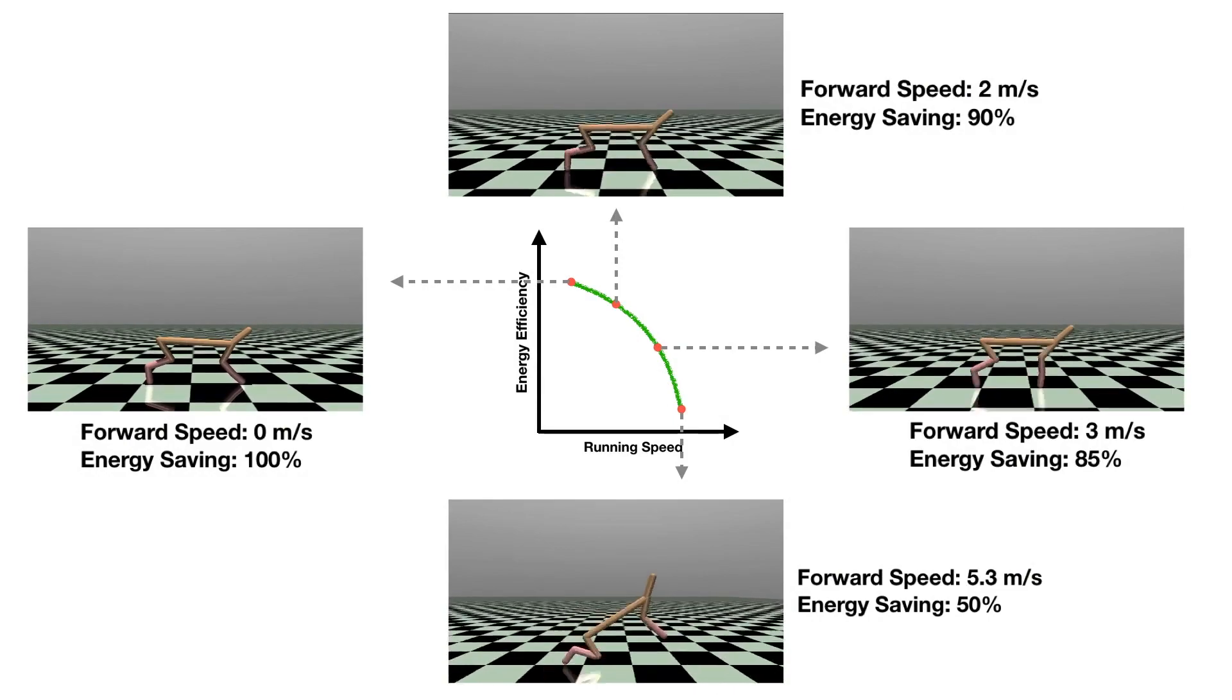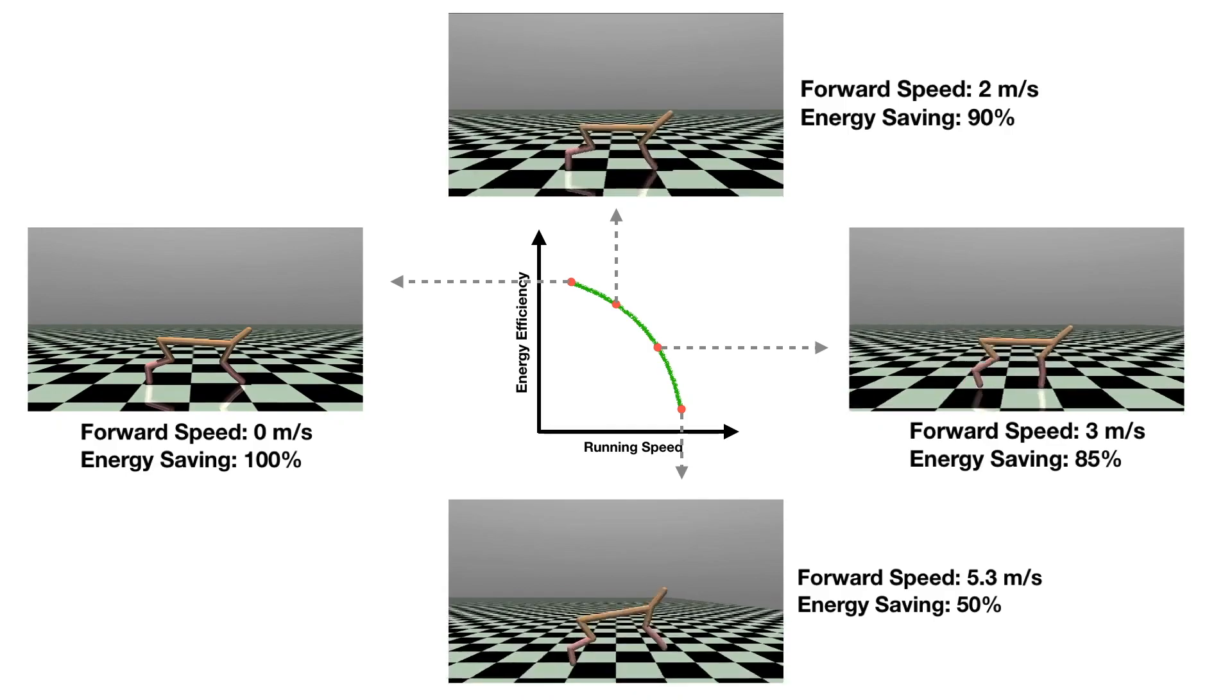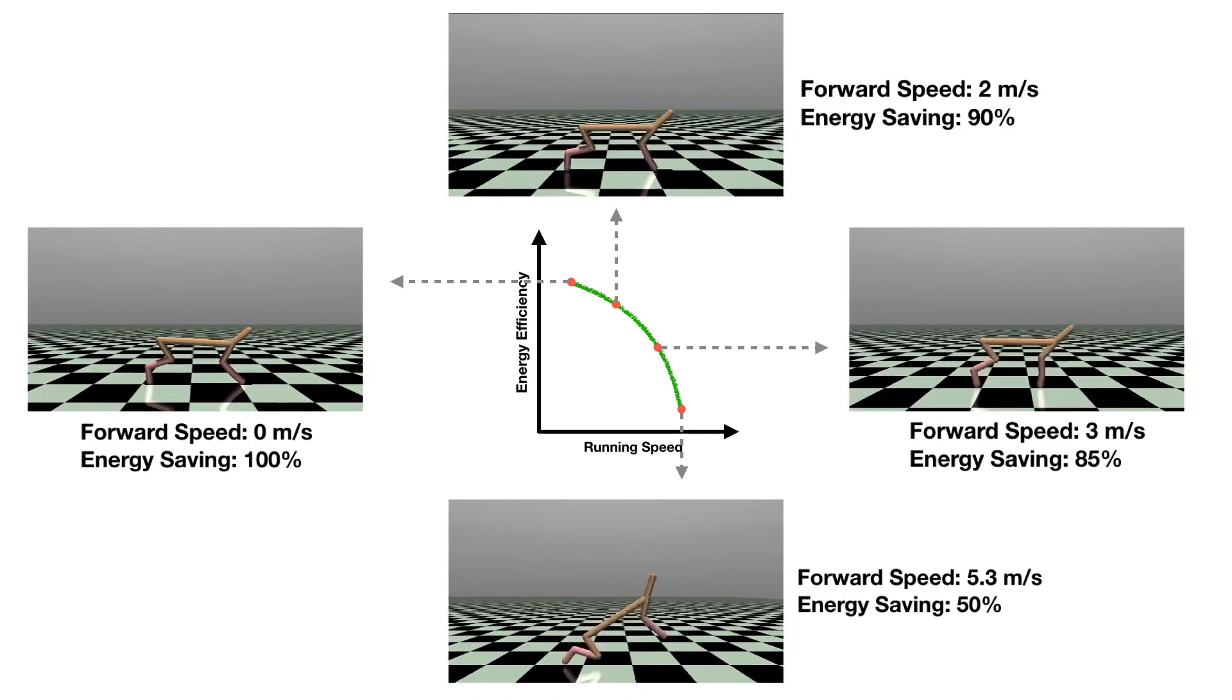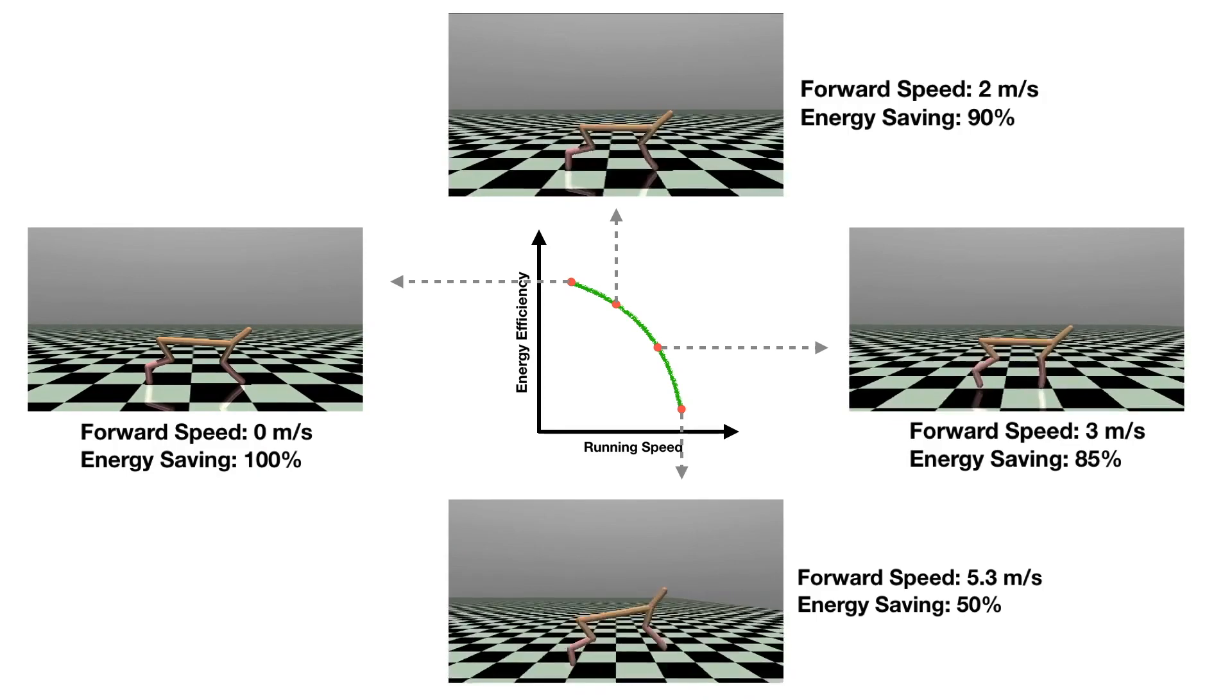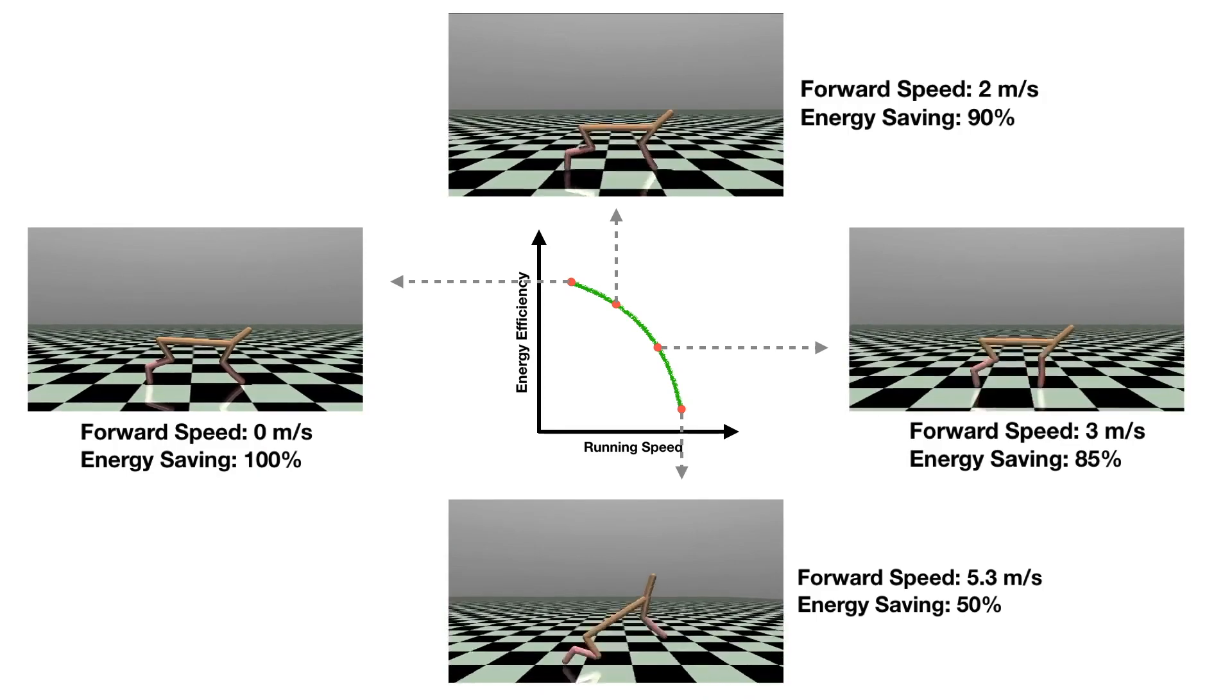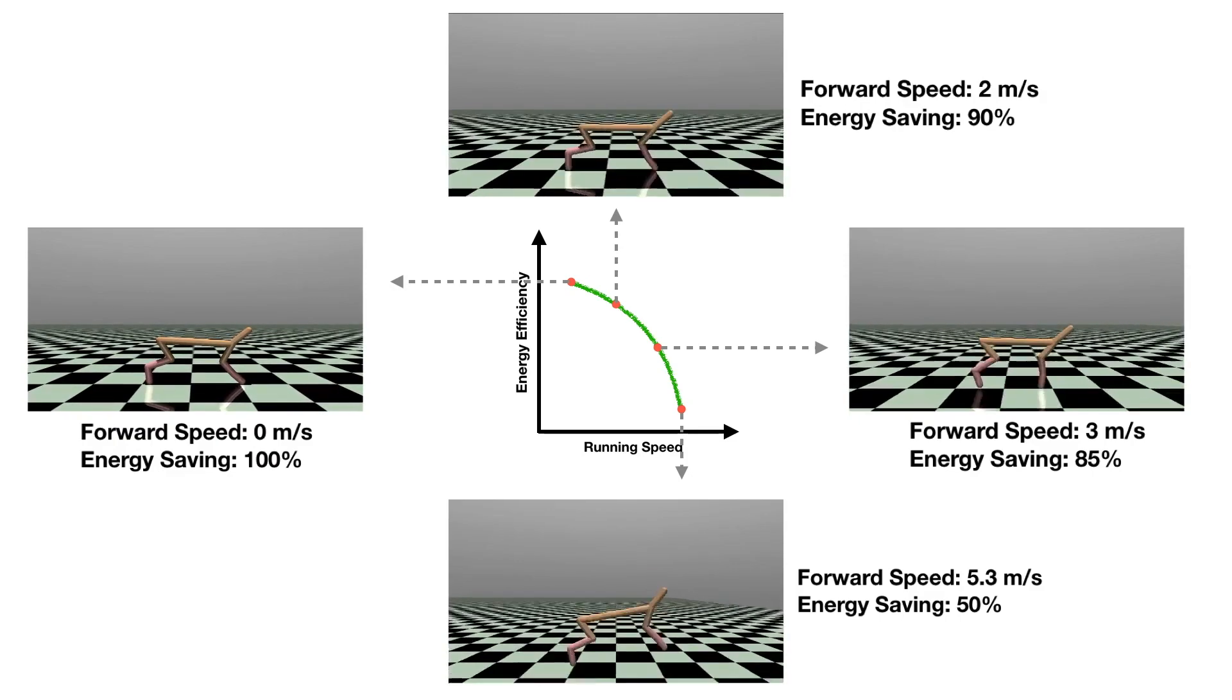Many robot control problems involve conflicting objectives. For example, we need to consider both running speed and energy efficiency for a cheetah robot. In such cases, no single best policy exists. Instead, a set of Pareto-optimal policies are desired.